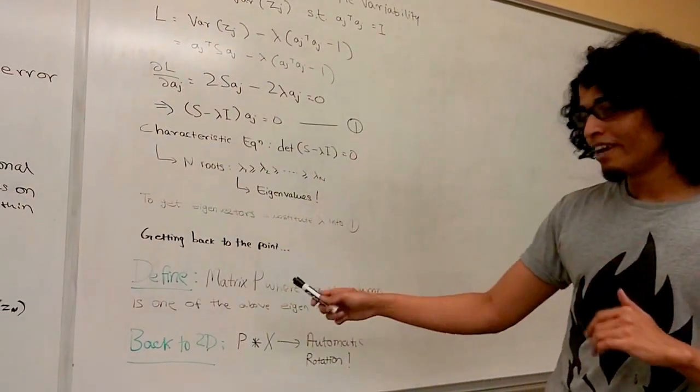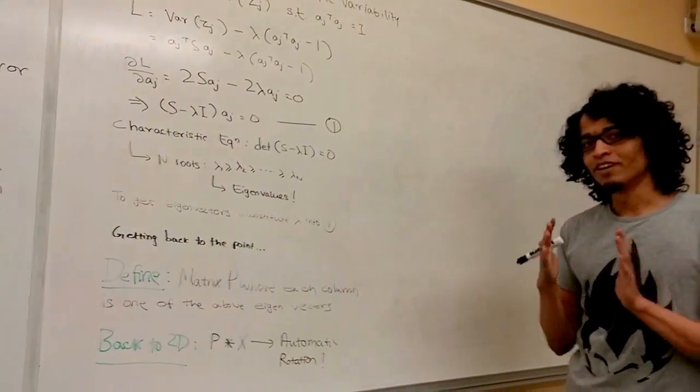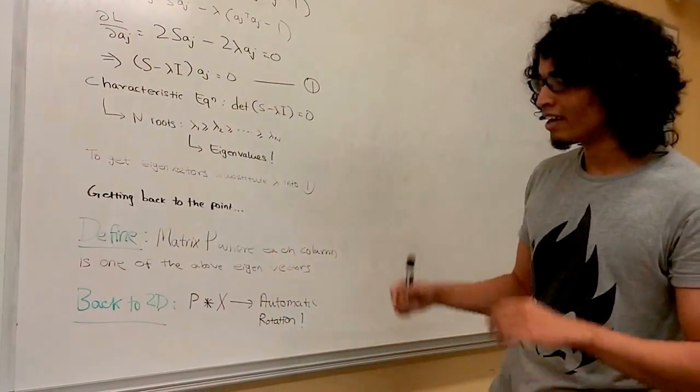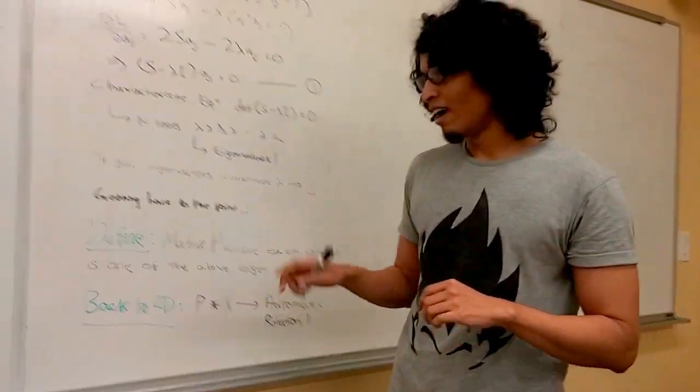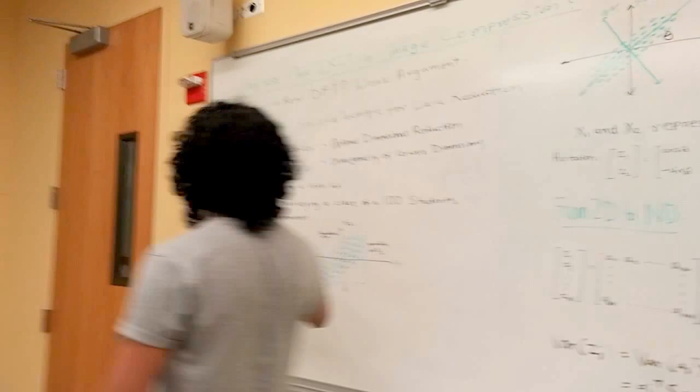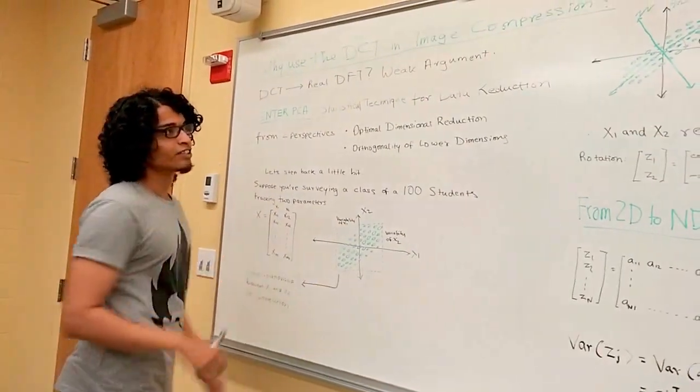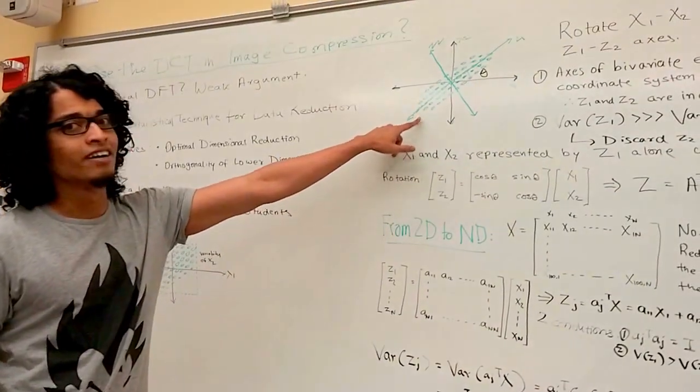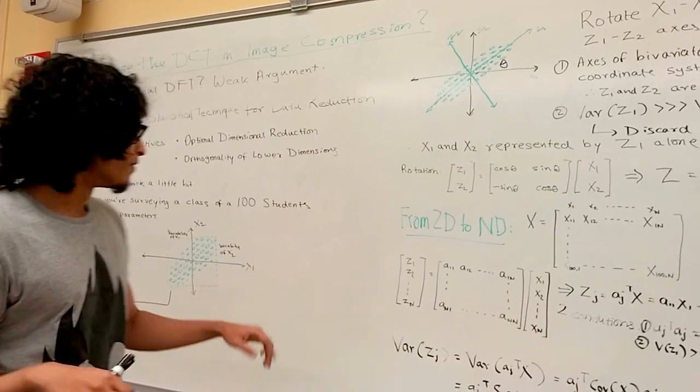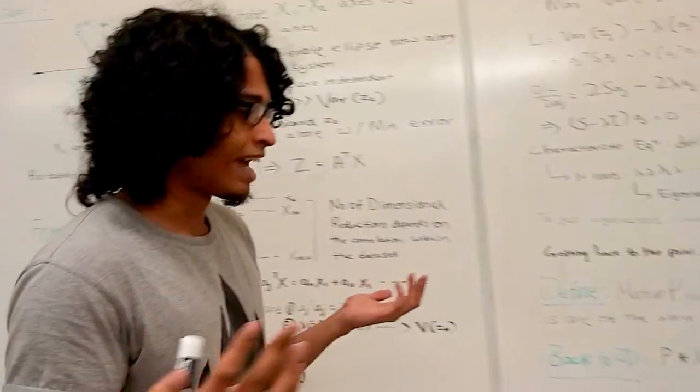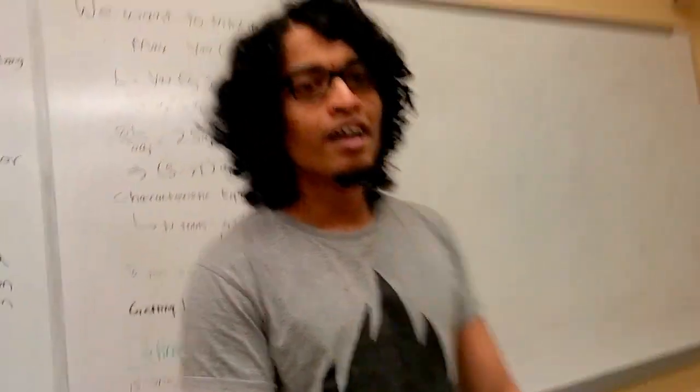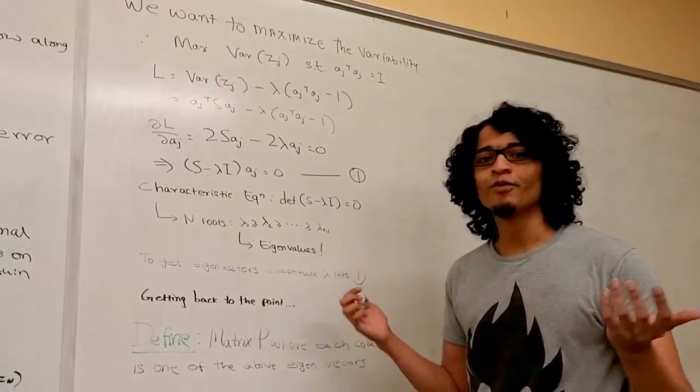Let's get back to the point. Let's define a matrix P, where each column is one of the eigenvectors we just derived. If you take this matrix P and multiply it with our original dataset, this rotation automatically occurs. We never plug in any angle. We never plug in this rotation matrix. It just happens optimally.